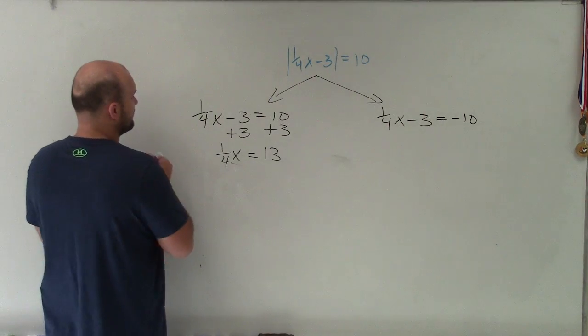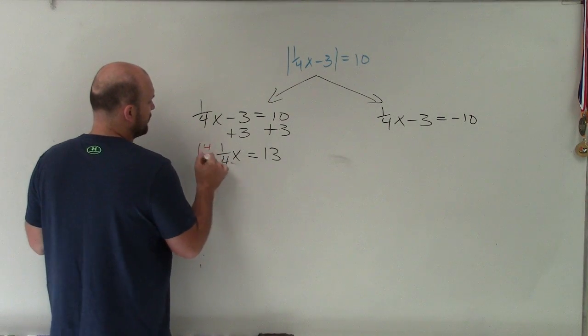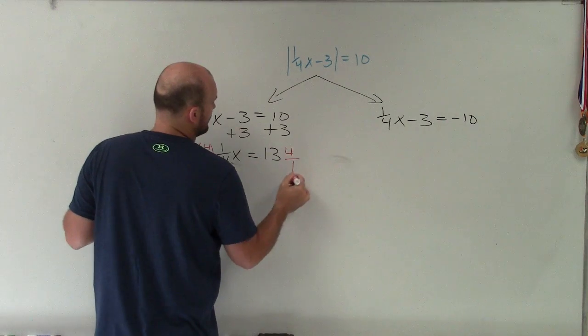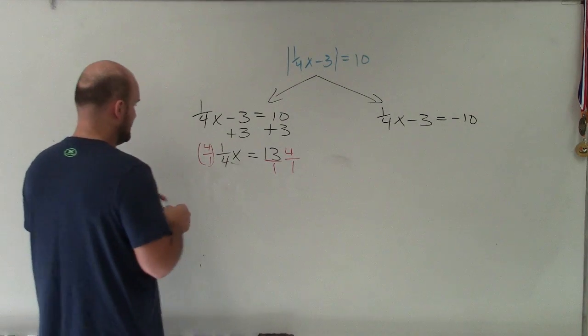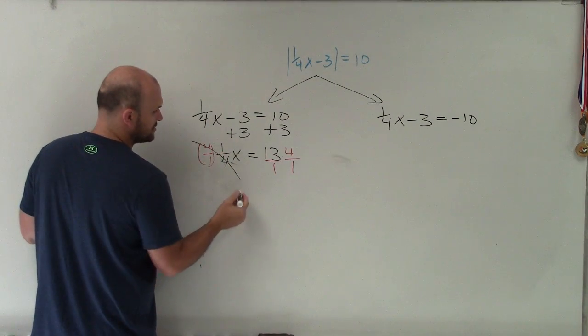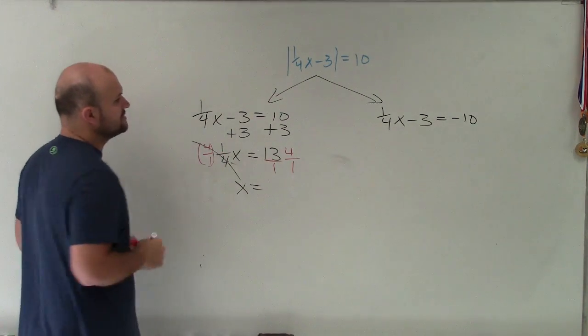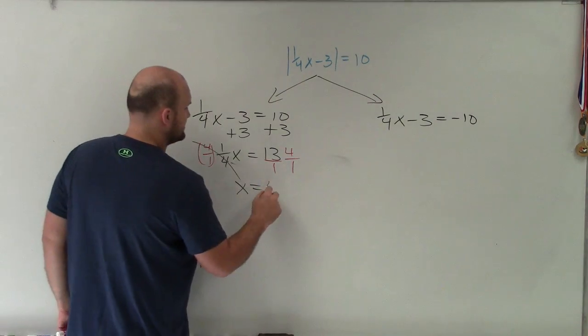So multiplying by the reciprocal of 1/4 is just multiplying by 4 over 1. Now remember, this 13 we can rewrite as 13 over 1, because it's a whole number. And therefore, any number multiplied by its fractions goes to 1. So x equals 13 times 4 is... So we'll have 52.